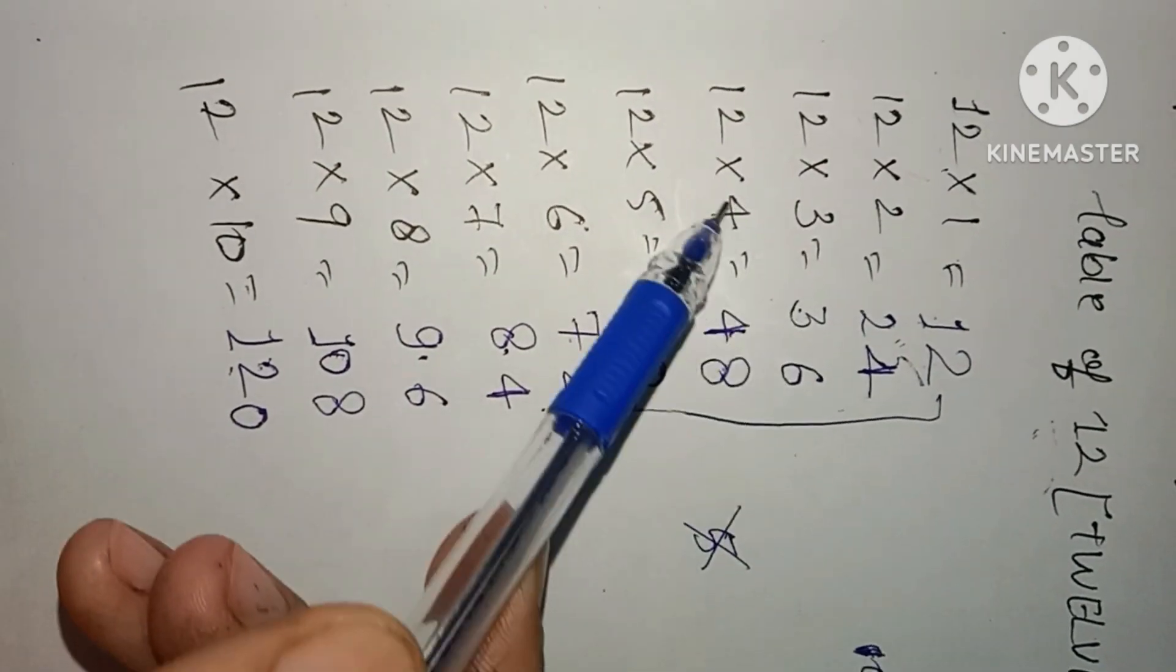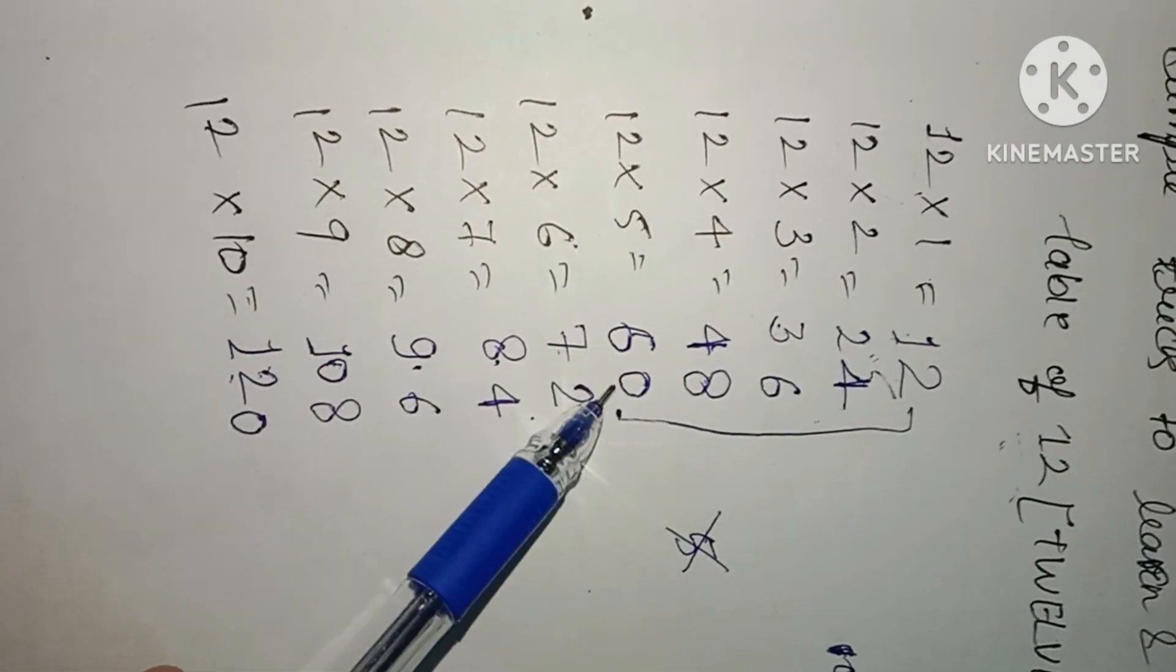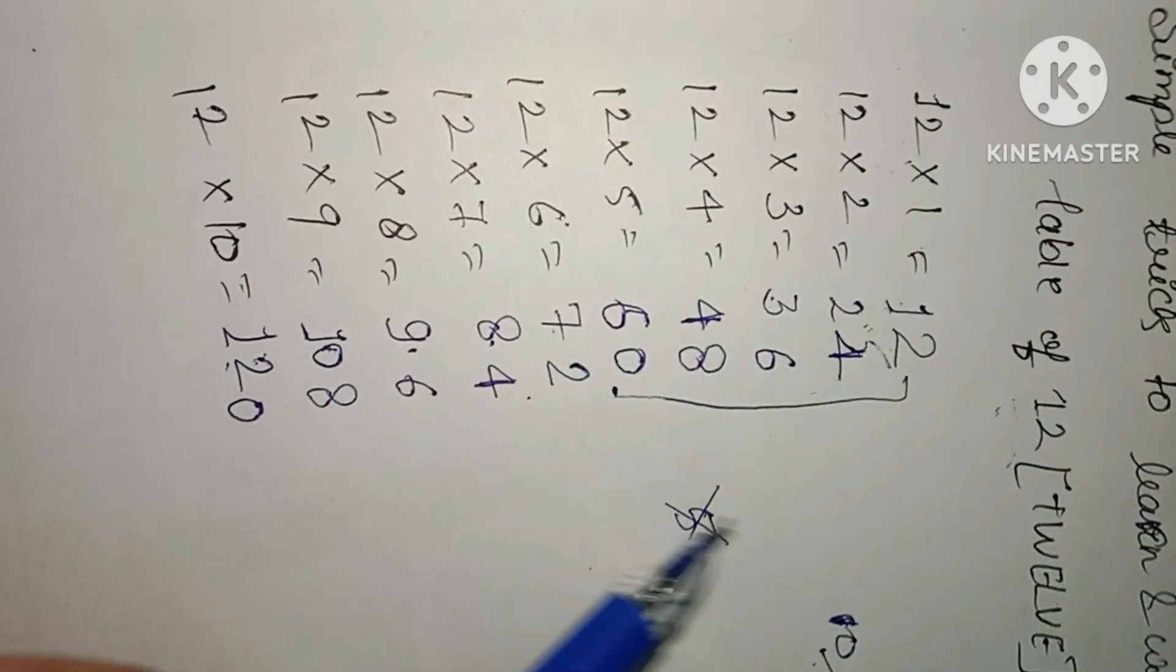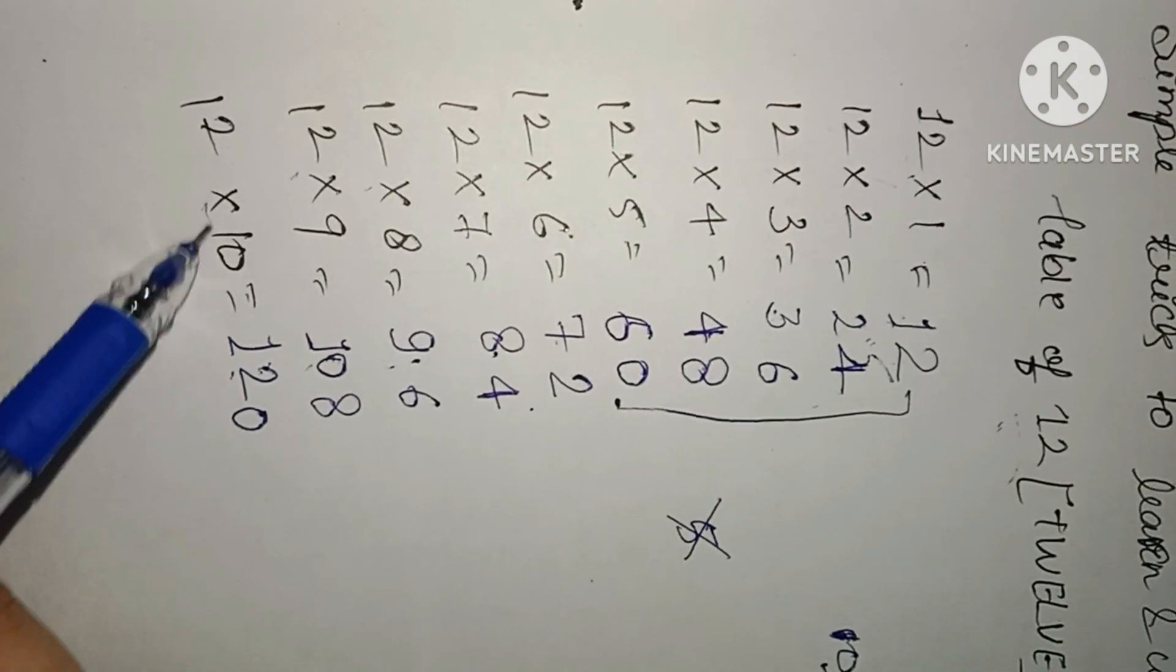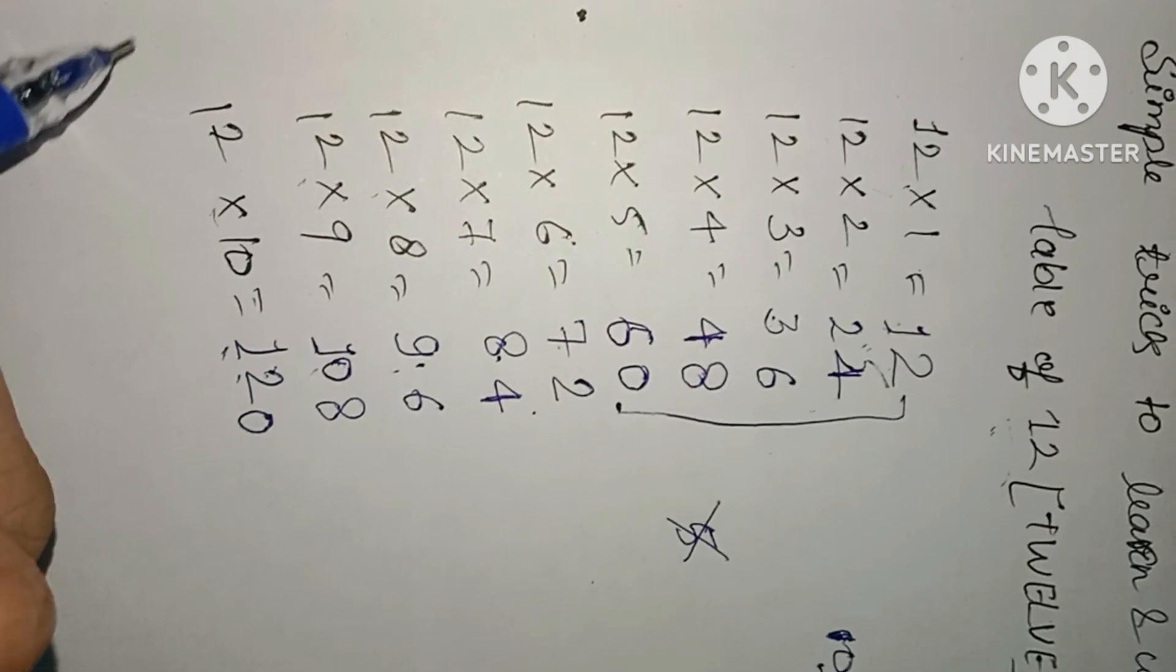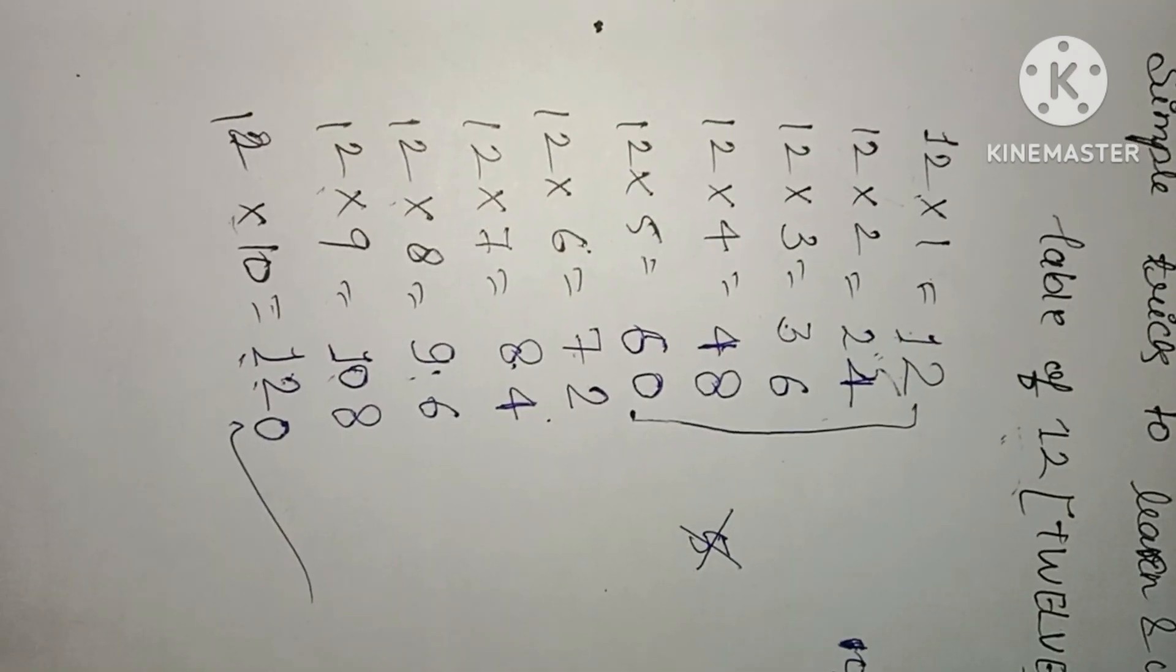12 times 1 is 12, 12 times 2 is 24, 12 times 3 is 36, 12 times 4 is 48, 12 times 5 is 60, 12 times 6 is 72, 12 times 7 is 84, 12 times 8 is 96, 12 times 9 is 108, 12 times 10 is 120.